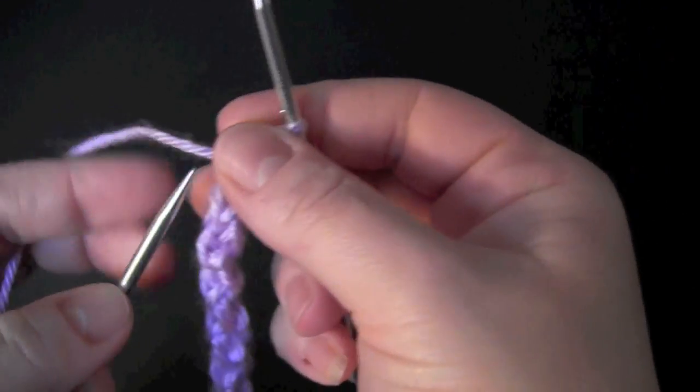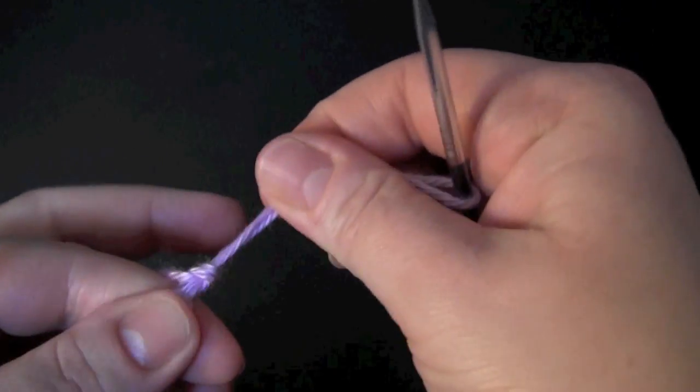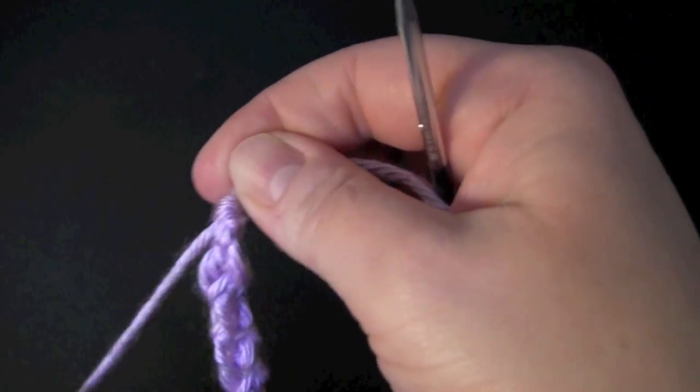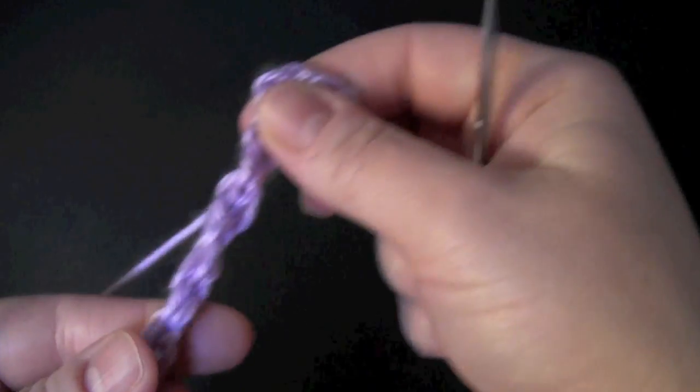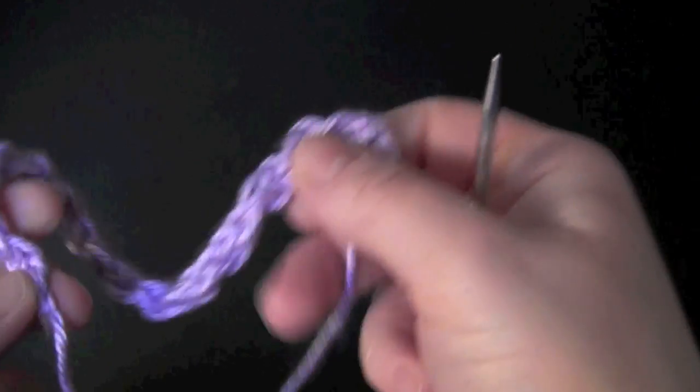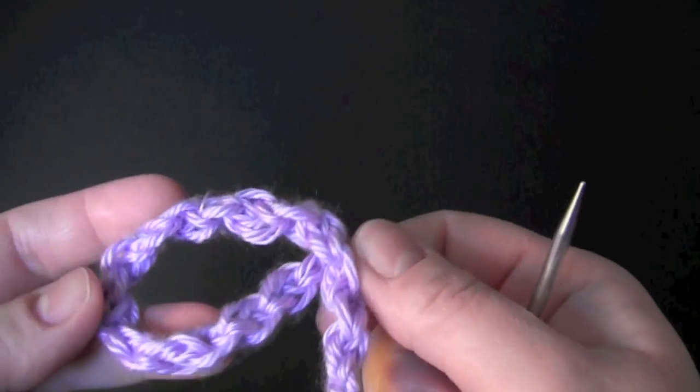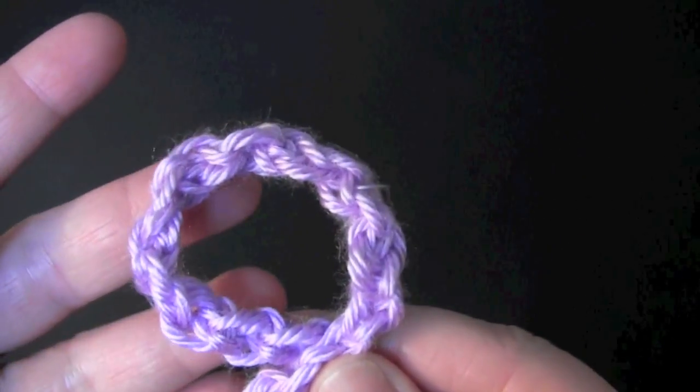Then cut your yarn, pull your tail through, and you can just take your yarn needle and stick it down through here and make your little tail disappear. So that's it. That's how to make a knitted chain.